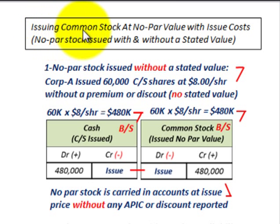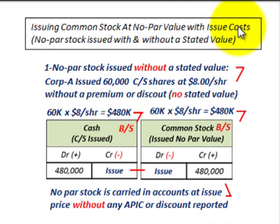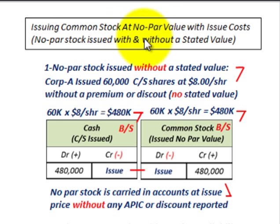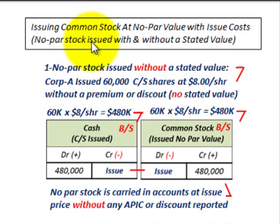Here we're going to be looking at issuing common stock at a no par value, and it's going to involve some issue costs. We're going to look at two cases: where we issue no par stock with a stated value, and where we issue no par stock without a stated value.